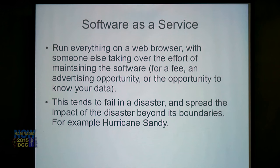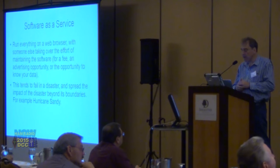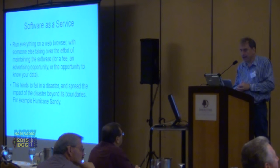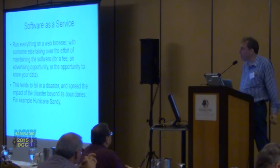Software as a Service tends to fail in a disaster, and it spreads the impact of the disaster beyond its boundaries. For example, in Hurricane Sandy, if you had a server in New York and a backup server in Washington DC, they were both down - and wherever you were, your systems were down. So we don't necessarily want to depend on Software as a Service if that service is coming from more than three feet from us. So how do we get it to come from three feet from us?